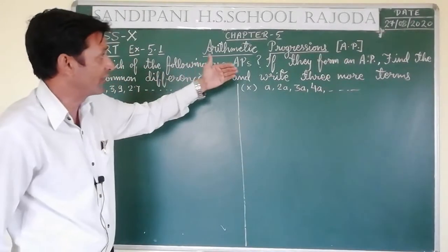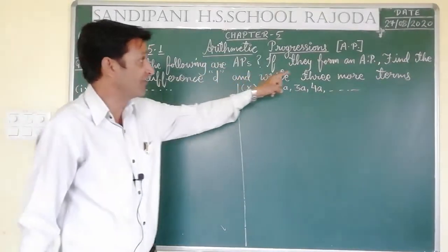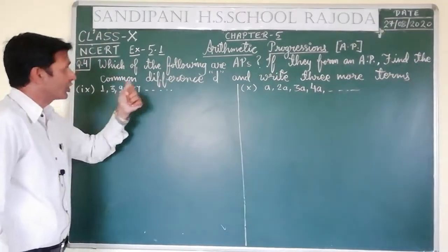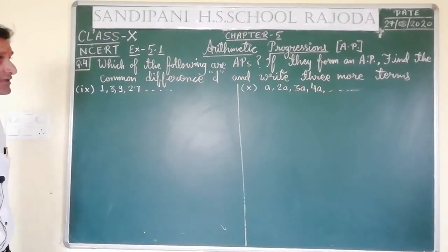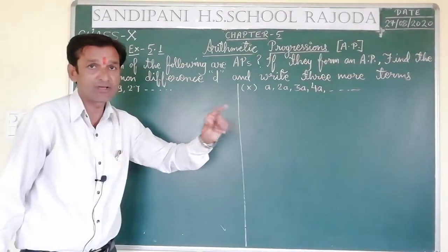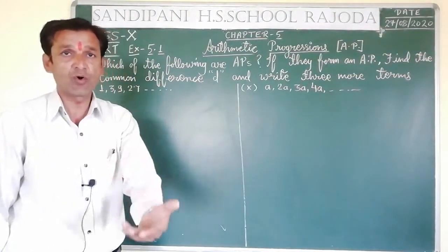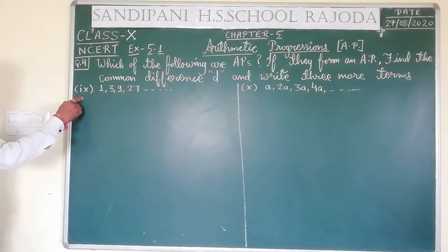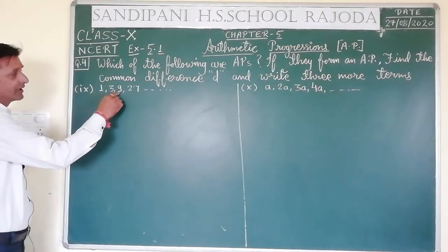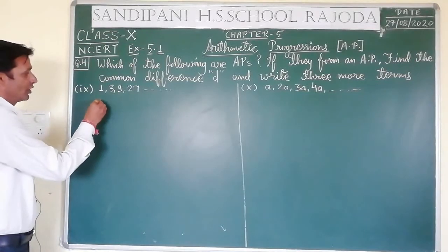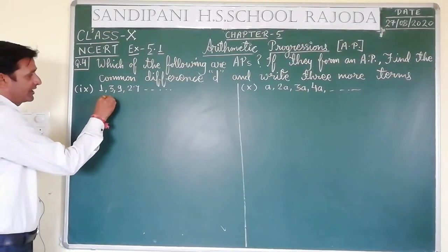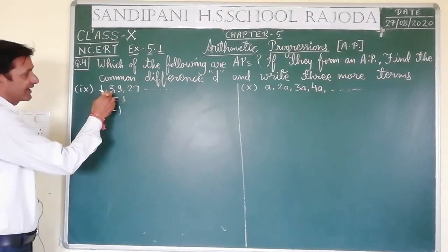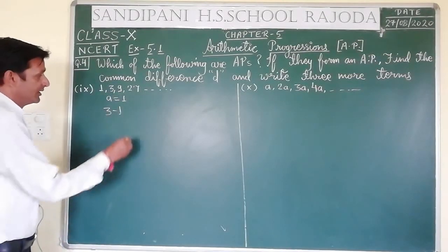If they form an AP, then find the common difference and write 3 more terms. This is the 9th question. The sequence is 1, 3, 9, 27. So we subtract the 1st term from the 2nd term — 3 minus 1 equals 2 — and check if it equals the 3rd term minus the 2nd term.